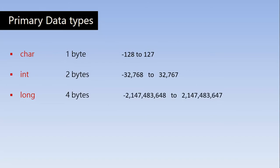The long data type has both a negative and positive range. Whatever value falls between these two bounds can be stored in a long variable. Assuming a 16-bit computer, a long variable requires four bytes of memory.